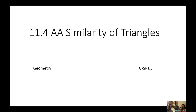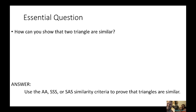11.4 AA Similarity of Triangles Geometry. The essential question: how can you show two triangles are similar? The answer is you use the AA, SSS, or SAS similarity criteria to prove that triangles are similar.